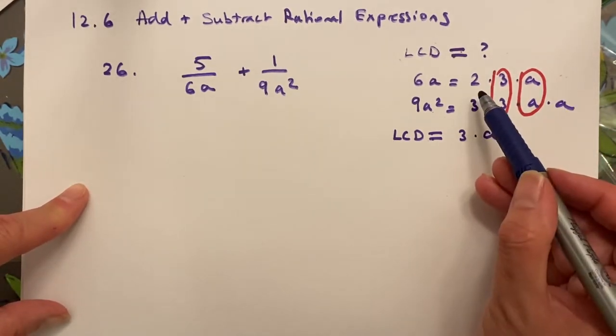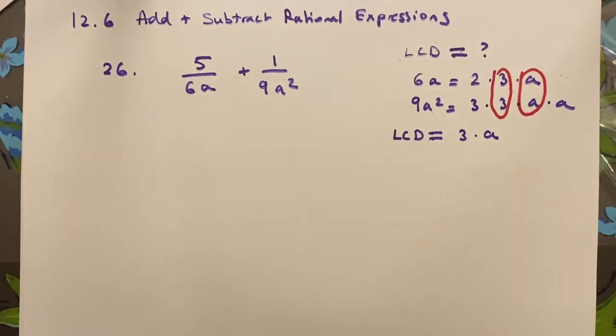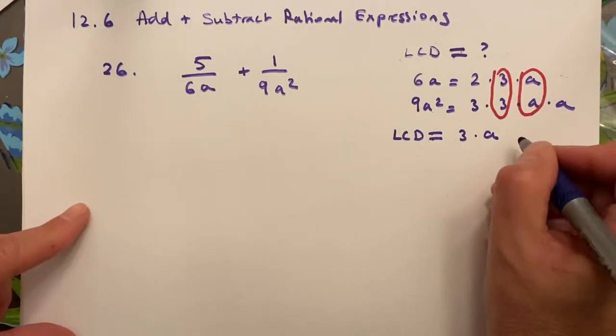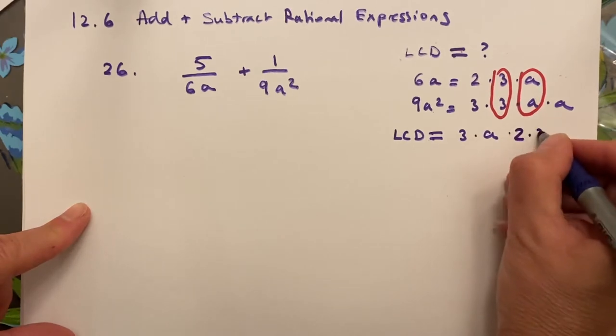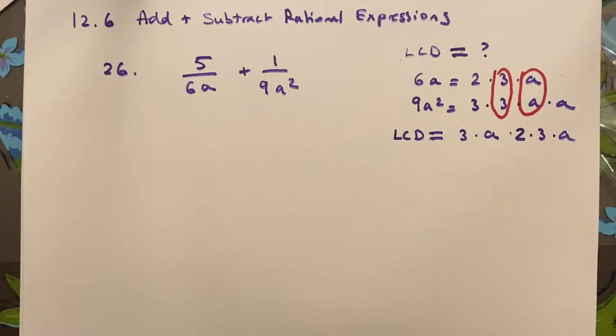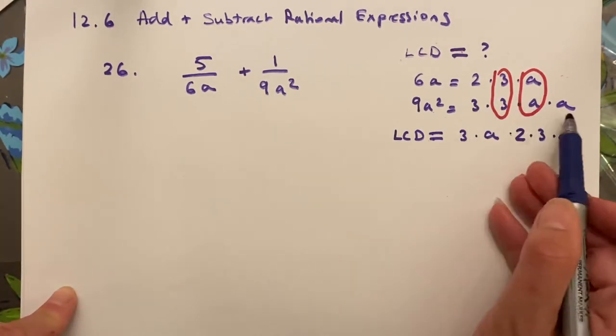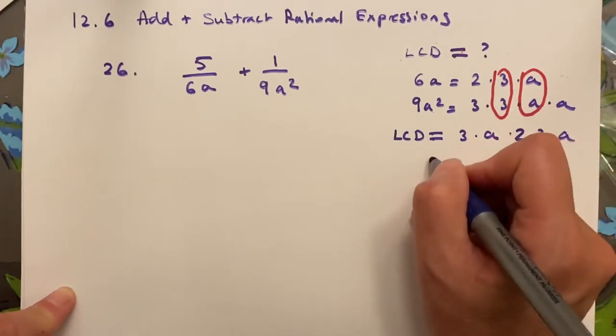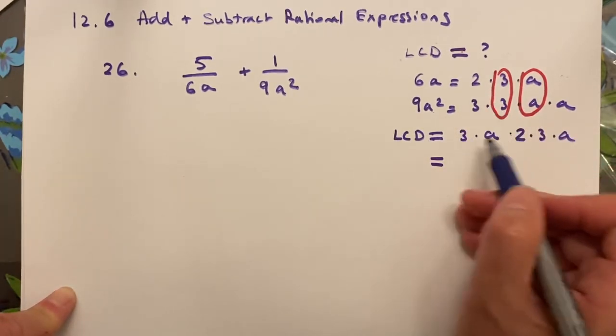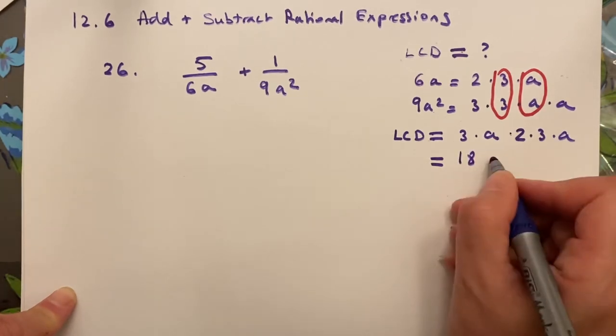And then you fill in the rest with all of the factors that are left over. So I start with 3 times a, and then I add 2 times 3 times a, the 3 that are left over. So I only add the 3 and the a once because they're in common, and then I add the remainder, the remaining factors. So my LCD ends up being 3 times 2 is 6 times 3 is 18, and a times a is a squared.